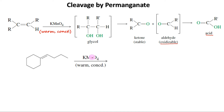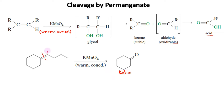In these molecules, the products can be written by cleaving the double-bonded carbons into carbonyl groups. In this first example, two alkyl groups are attached to one carbon, so it will be converted into a ketone. On the other side, one hydrogen is attached, which means it will be first converted to an aldehyde, which will then be oxidized to a carboxylic acid.